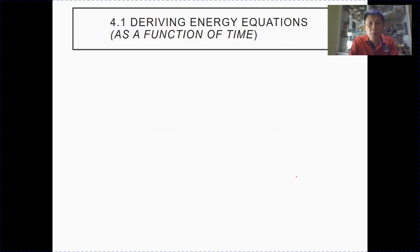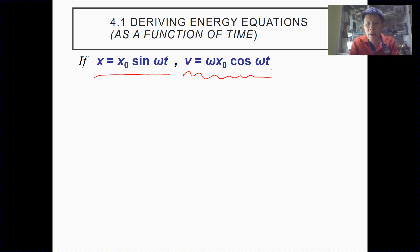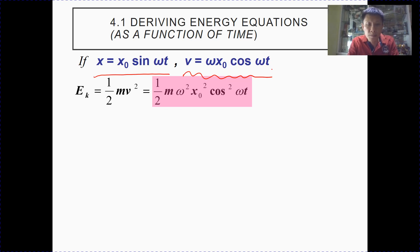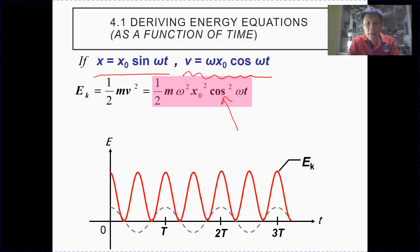Now that you have seen how energy changes with displacement, let's look at how energy changes with time. Again, we start off with kinetic energy. If we use a sine graph to represent displacement, then the corresponding velocity graph after differentiating will be this. Kinetic energy is half mv squared. By substituting v squared into this expression, we have the expression for kinetic energy as a function of time. You can see that it is a cosine squared graph. The dotted line represents a typical cosine graph, and kinetic energy is represented by the cosine squared graph shown in red.